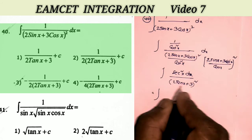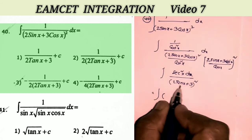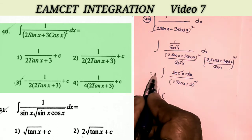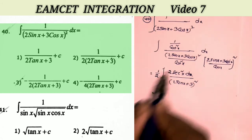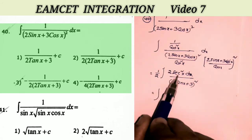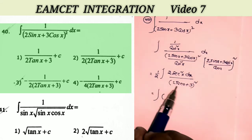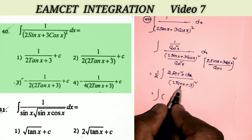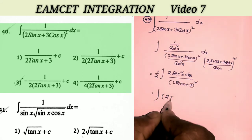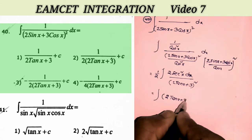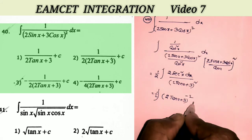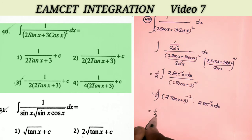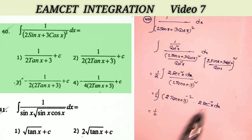This is equal to integral of sec² x dx by (2 tan x + 3) whole square. What is the derivative of (2 tan x + 3)? The derivative of 2 tan x is 2 sec² x, and derivative of 3 is 0. To form the derivative I apply 1/2 here, so the integral becomes (1/2) · (2 tan x + 3)^(−2) · 2 sec² x dx. Clearly this is in the form f(x)^n · f'(x).